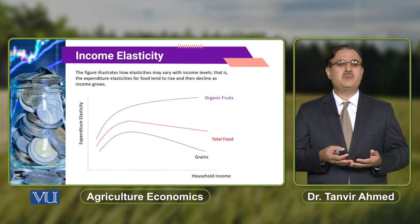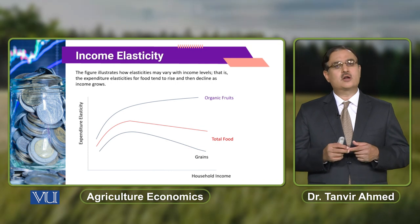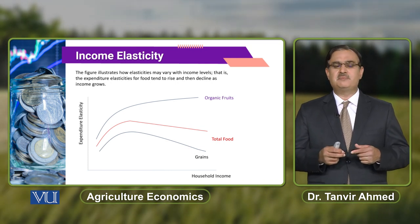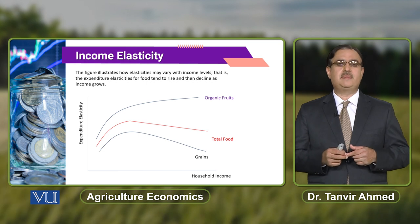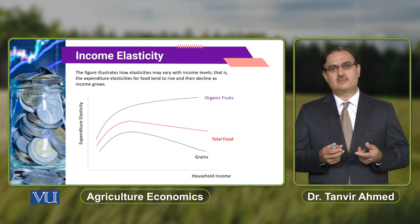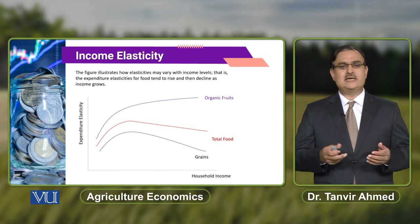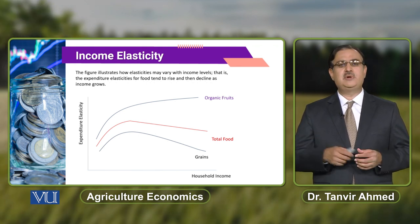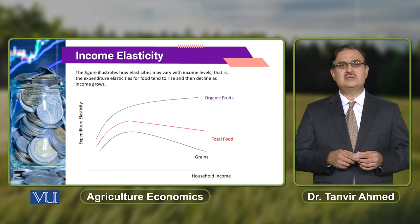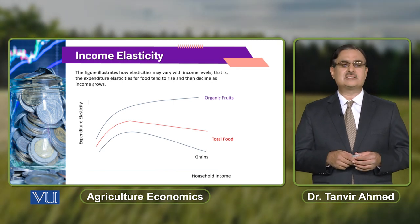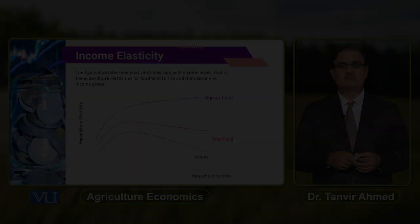Now we are in a position to understand the income elasticity of demand for agricultural output — in this case, organic food. What is the impact of percentage change in quantity demanded or percentage change in income? This impact can be elastic, inelastic, or unit elastic.